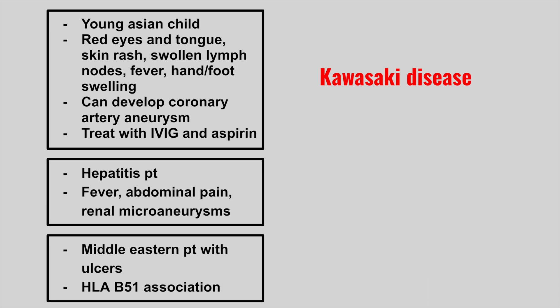Next, we have a patient who has hepatitis, and they develop fever, abdominal pain, and renal microaneurysms. So this is polyarteritis nodosa, and the renal microaneurysms are really important here. Remember, Buerger disease, Kawasaki, and polyarteritis nodosa are all examples of medium vessel vasculitis.